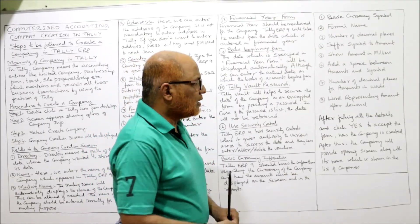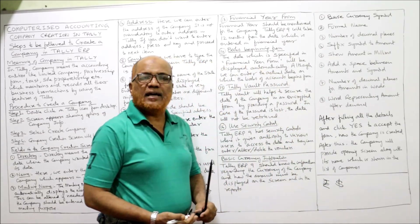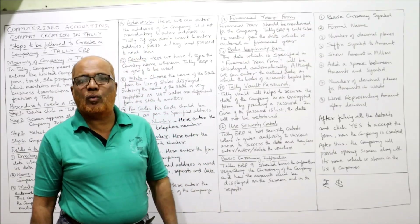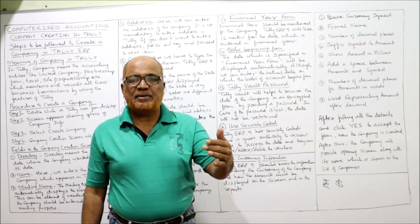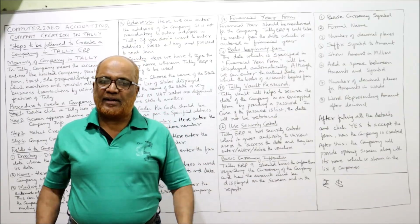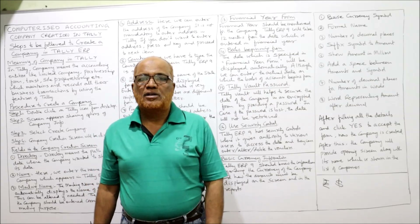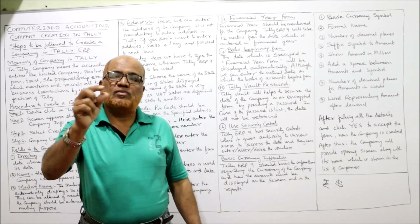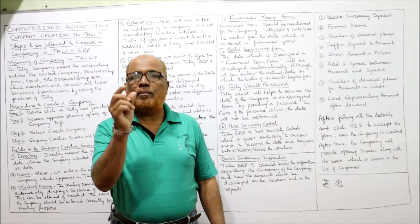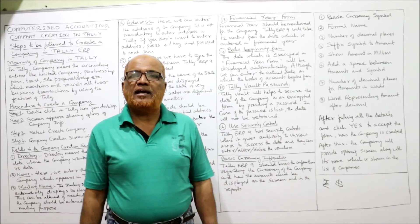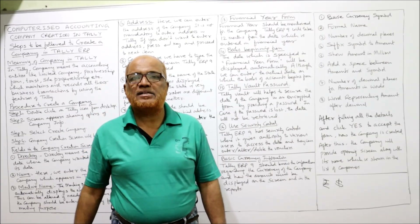The currency fields are: 'Base Currency Symbol' — every currency has a symbol; for example, the rupee symbol for India or the dollar symbol for the USA. Then 'Formal Name' — the full name of the currency must be given to avoid confusion; for example, 'Indian Rupees' versus 'Nepalese Rupees,' since both countries use 'rupees.' Then 'Number of Decimal Places' — for example, in India the fractional currency is paisa, which uses two decimal digits.